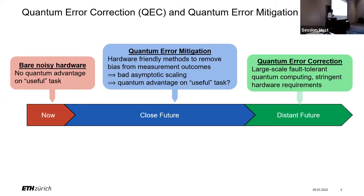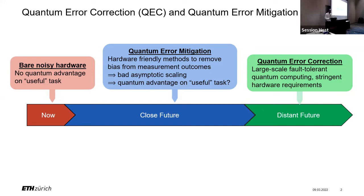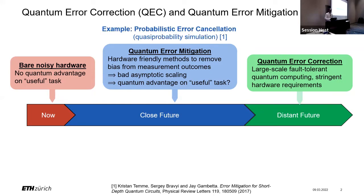For this reason, it's probably still going to be quite some time before we have such a computer, and in recent years the field of quantum error mitigation has gained a lot of traction. Error mitigation is just a collection of different techniques that try to reduce or remove the effect of noise in a more hardware-friendly manner. Of course these techniques are not meant to be a replacement for error correction — they all come with drawbacks, such as being non-generalizable or having bad asymptotic scaling compared to error correction.